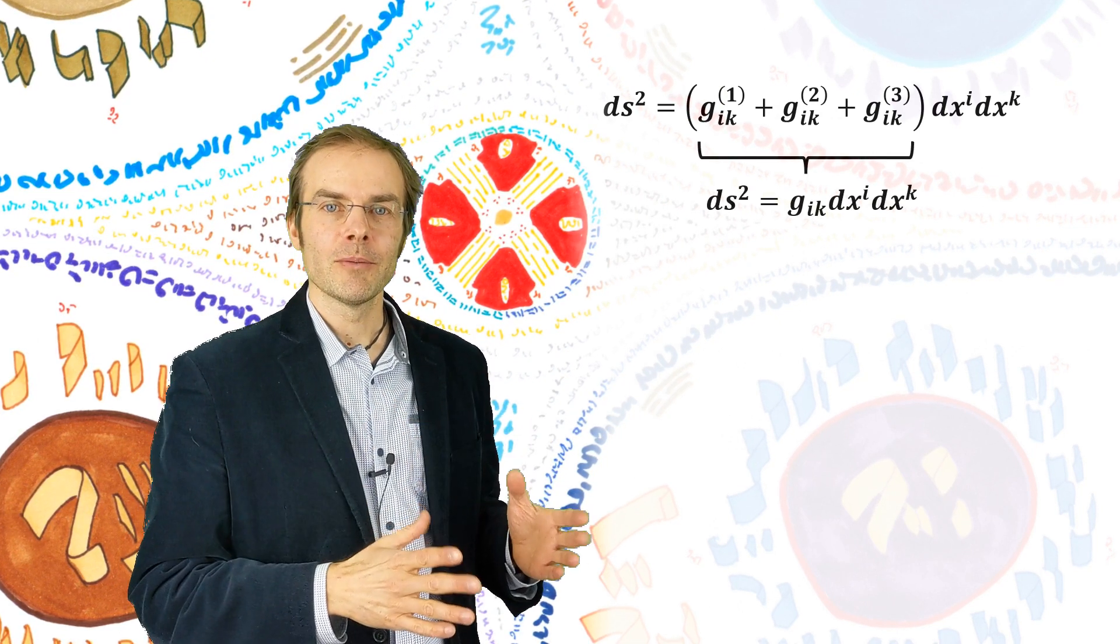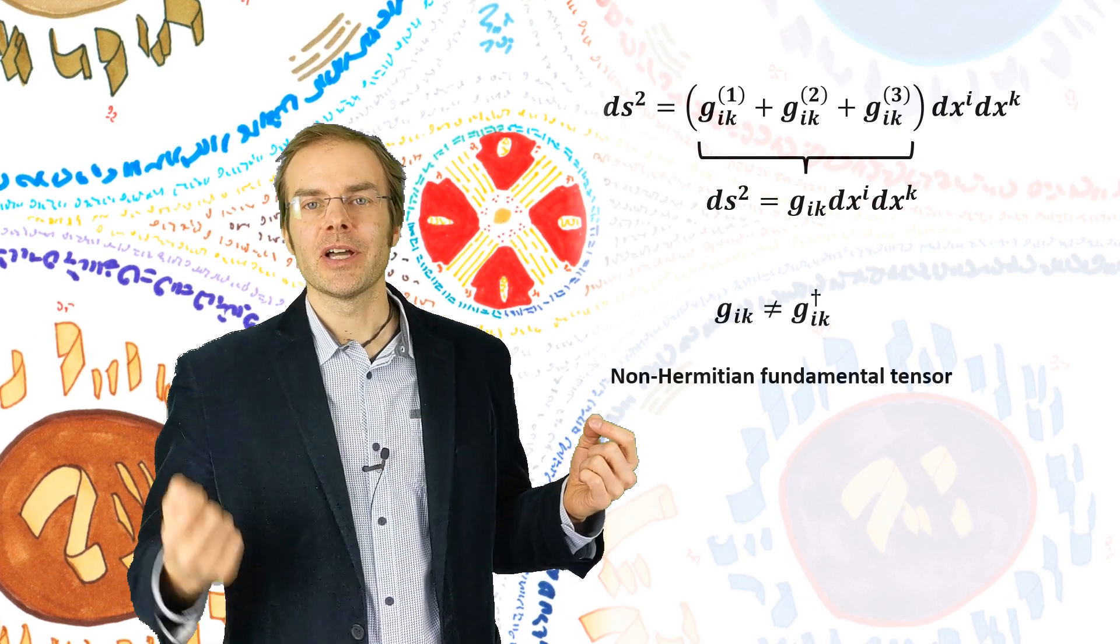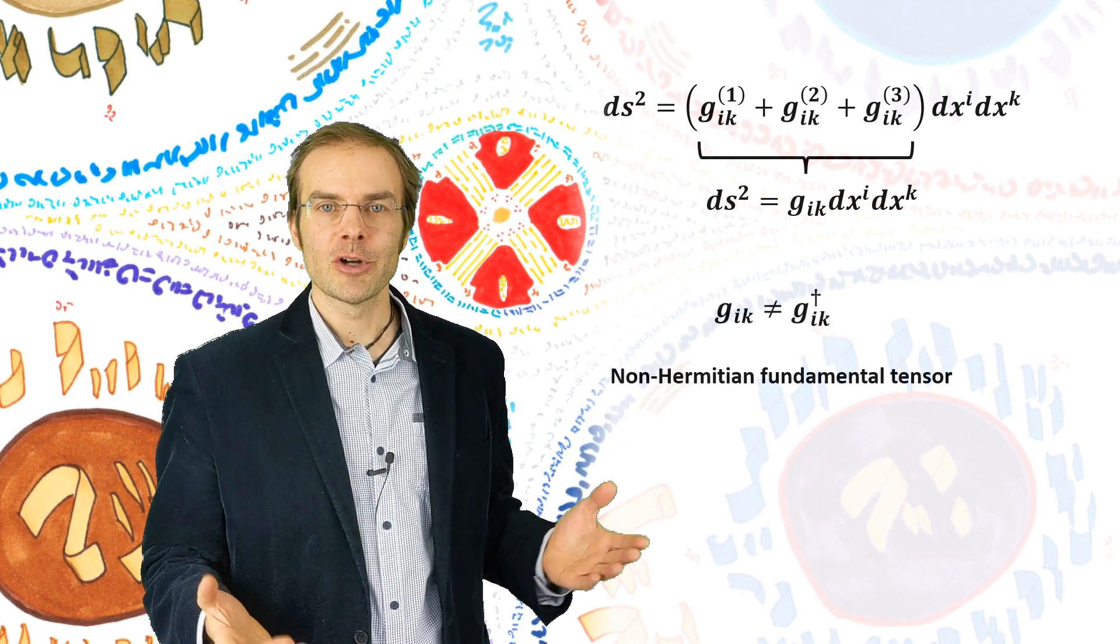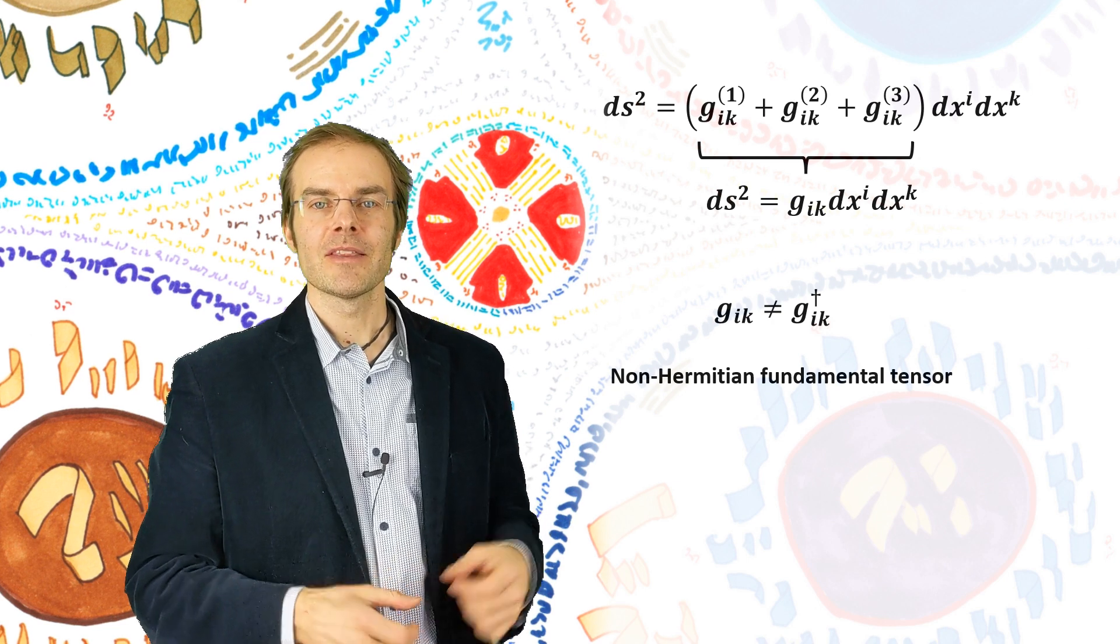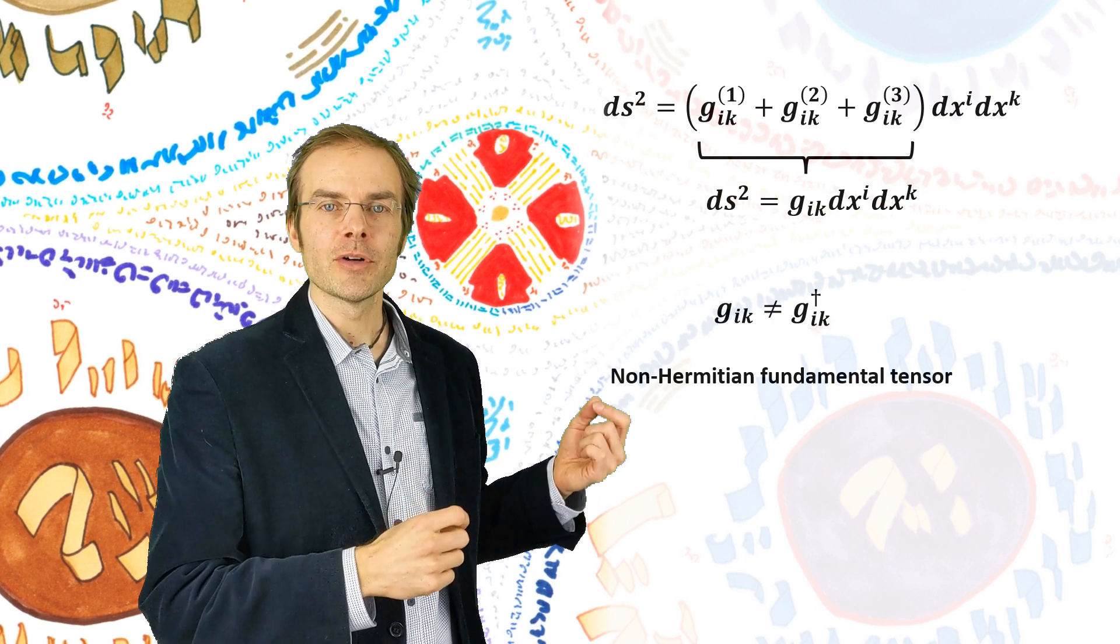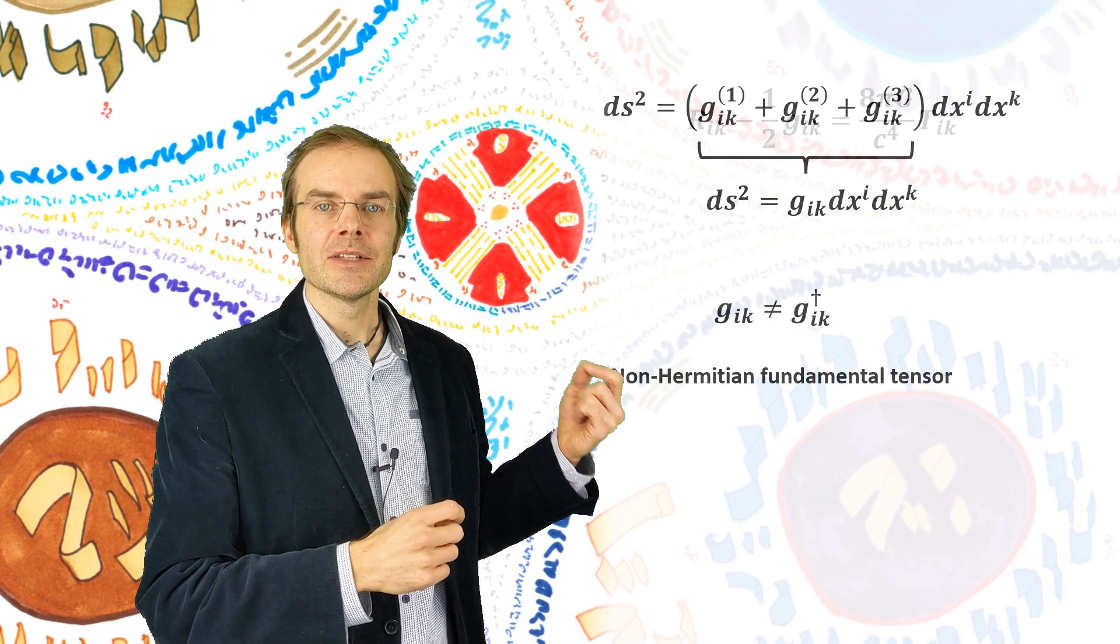If that is so, we can split this tensor in a Hermitian and anti-Hermitian part, as we can do with any complex tensor or matrix. The plus and minus indices now of course mean Hermitian and anti-Hermitian.